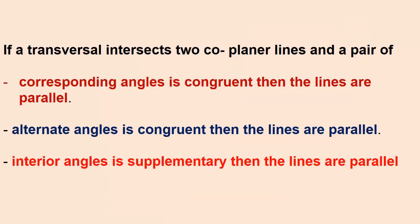So if a transversal intersects two coplanar lines and a pair of corresponding angles is congruent, that means the lines are parallel. If alternate angles are congruent, then also the lines are parallel. And if interior angles are supplementary, then the lines are parallel. This is the converse, but this concept is very important. It is used to solve the sums.